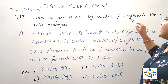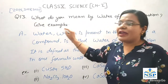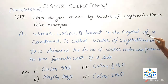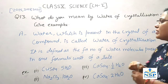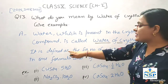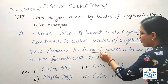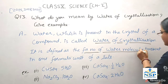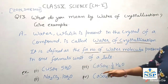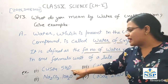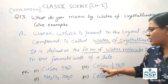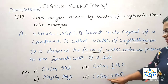Question number 13, which is also a very important question: What do you mean by water of crystallization? Give examples. Water which is present in the crystal of a compound is called water of crystallization. It is defined as the fixed number of water molecules present in one formula unit of a salt. For example, copper sulfate, washing soda, POP, and gypsum.